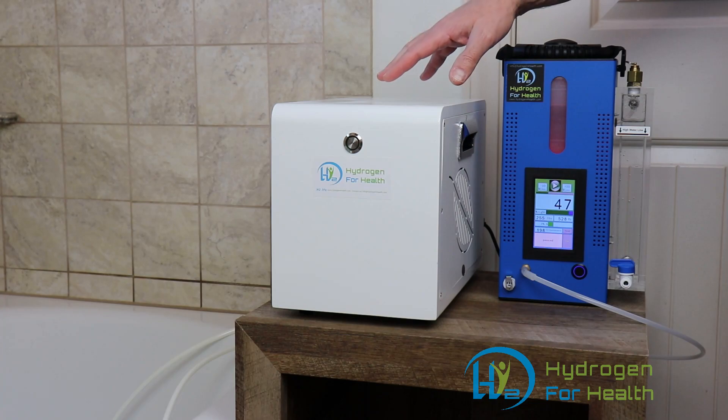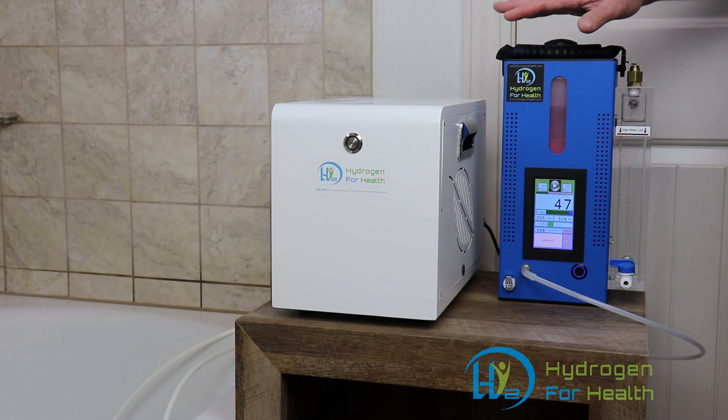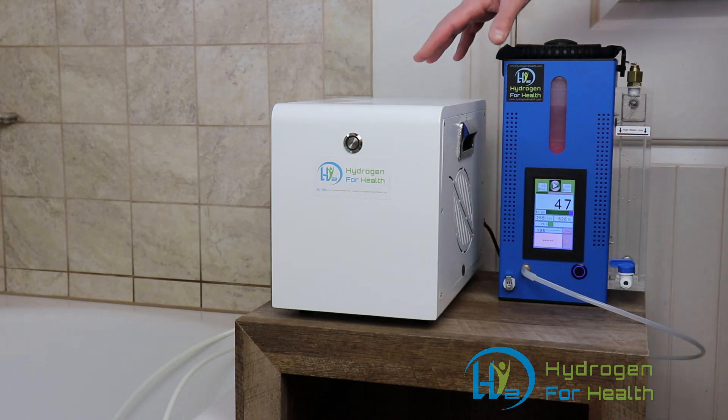The product by itself will put oxygen into your bath water and you can add hydrogen to it with an inhaler. The inhaler actually plugs into the back of the machine and it mixes in the hydrogen into the output that goes to the bath water.